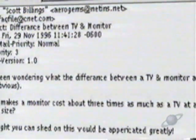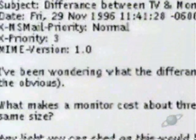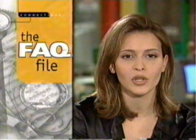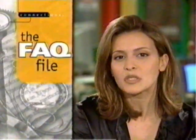Scott Billings of Iowa asks: what's the difference between a TV and a computer monitor, and why does a computer monitor cost three times as much as a same-size TV? Well Scott, the main difference is resolution — the quality of the image displayed. Resolution is measured in pixels, the tiny dots that make up the image on your screen, which you can actually see if you get up real close. Computer monitors generally have double the dots of similar-sized televisions.